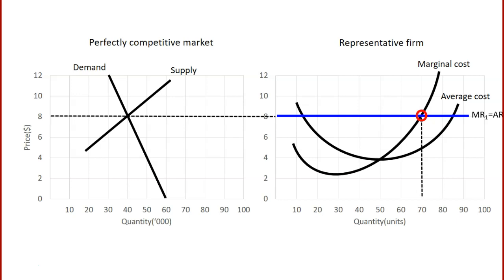How much profit is being generated? We know the revenue per unit — that is the average revenue. The cost per unit, the average cost, is given by the average cost curve. For 70 units of output, we can see that the average cost — the cost per unit for each of the 70 units — will be $5. From that, we can easily calculate the profit per unit: it's the difference between the revenue per unit, $8, and the cost per unit, $5.